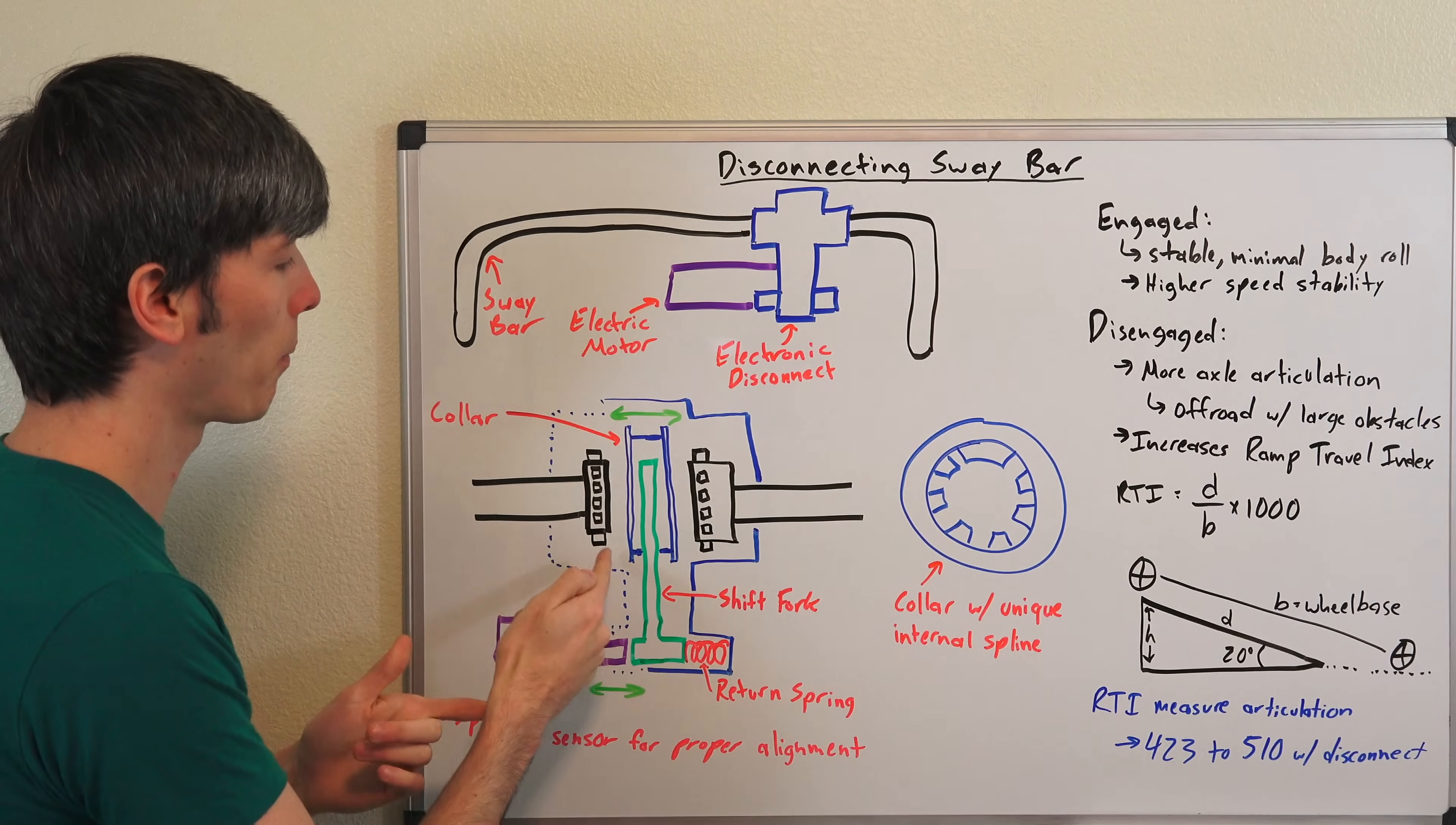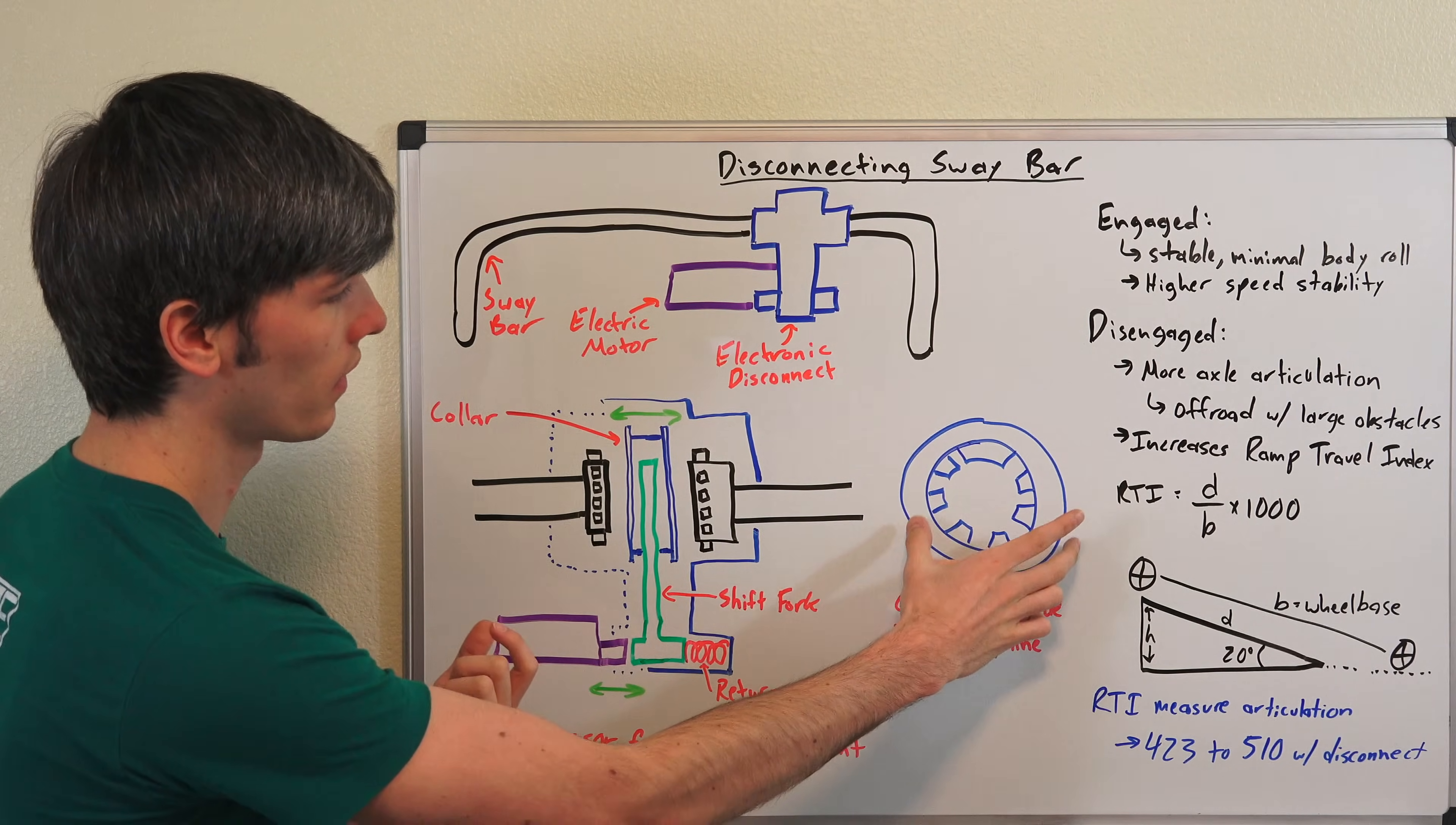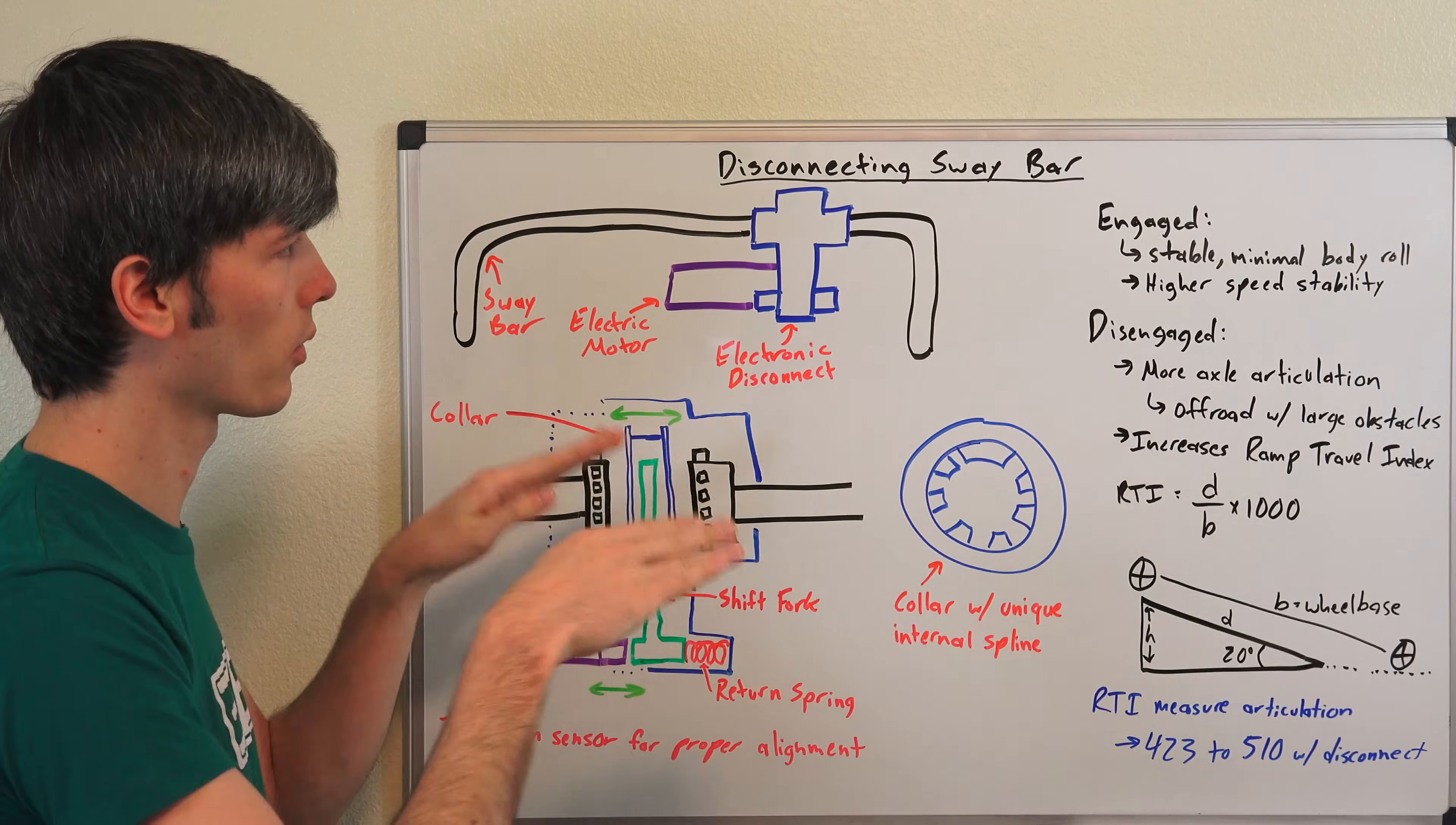And so you will have a position sensor in here that will, you know—so it won't allow you to reconnect, to re-engage that sway bar unless the position is correct. And also you can rely on a mechanical setup. This collar, if you look at the internal spline, you'll have a unique spline so that can only go in one way, so that it'll only reconnect if you have these perfectly parallel with each other so you're not creating that offset with the anti-roll bar.